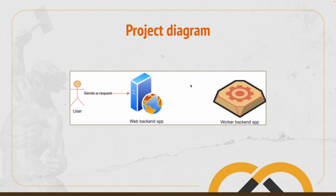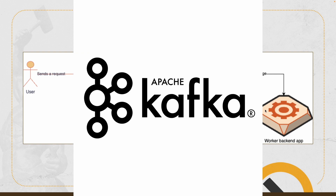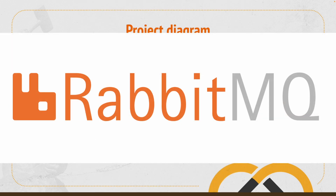The way that we use to communicate the web backend app to the worker app is to add a message queue in the middle — something like Kafka or RabbitMQ.